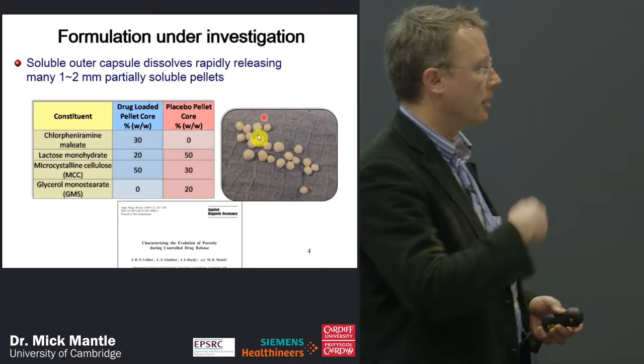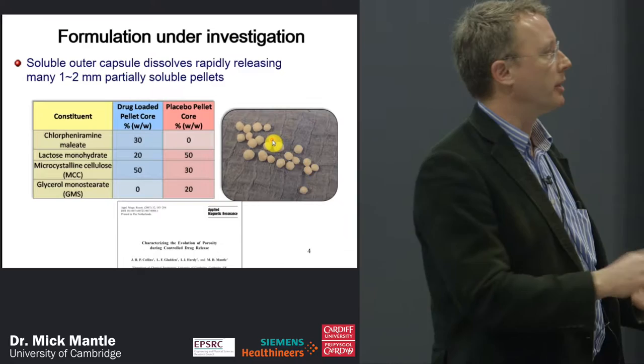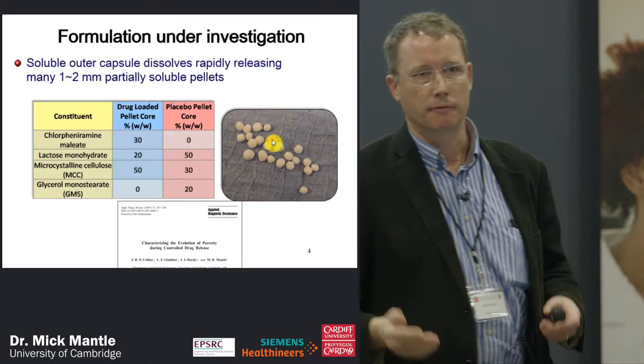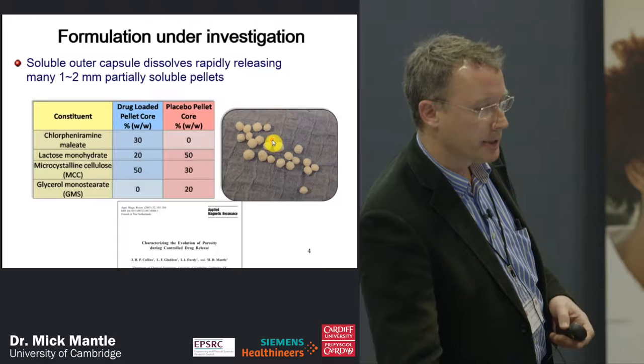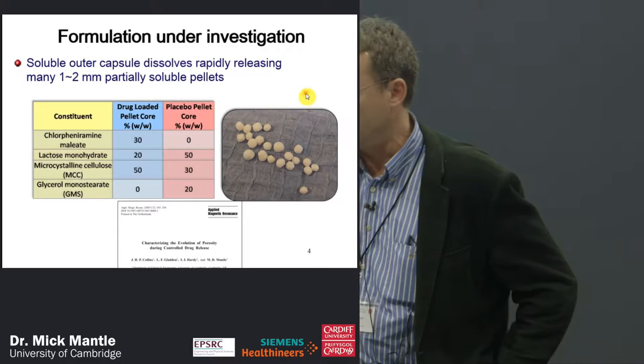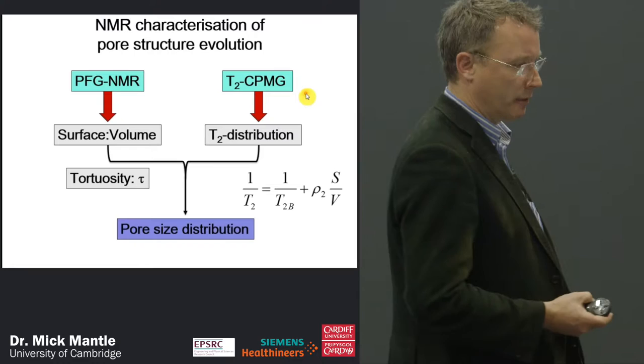What we're doing is taking these pellets, challenging them with a phosphate buffer solution at 37 degrees, stopping that, taking the pellets out of the medium, putting them into a 5 mm NMR tube and running PFG diffusion experiments on them. We want to look at pore size evolution, which requires knowing the surface-to-volume ratio and tortuosity of the porous matrix. PFG NMR gives us surface-to-volume ratio and tortuosity, but we also need information about the T2 distribution to look at pore sizes.